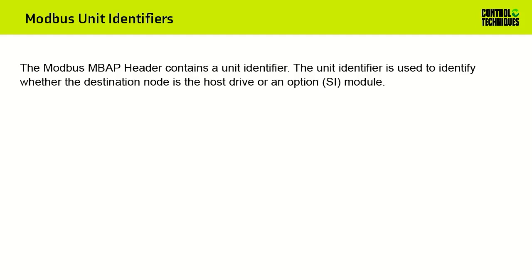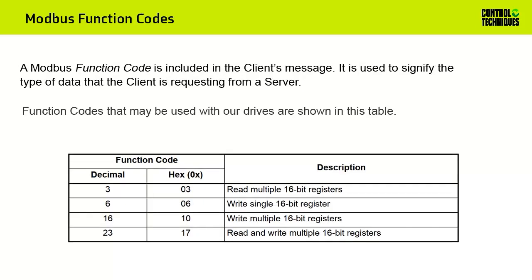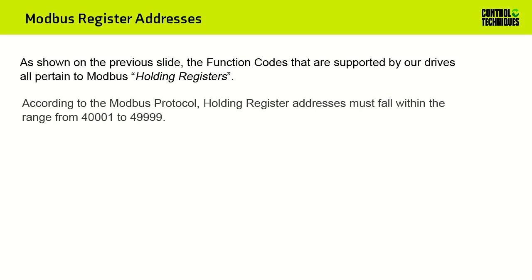Ordinarily, when using Modbus TCP-IP, a drive is identified by its IP address alone. However, you must ensure that your Modbus client supports the ability to include the unit identifier as part of its message. Valid unit identifiers are shown in this table. A Modbus function code is included in the client's message; it is used to signify the type of data that the client is requesting from a server. Function codes that may be used with R drives are shown in this table, and all pertain to Modbus holding registers. According to the Modbus protocol, holding register addresses must fall within the range from 400001 to 49999.